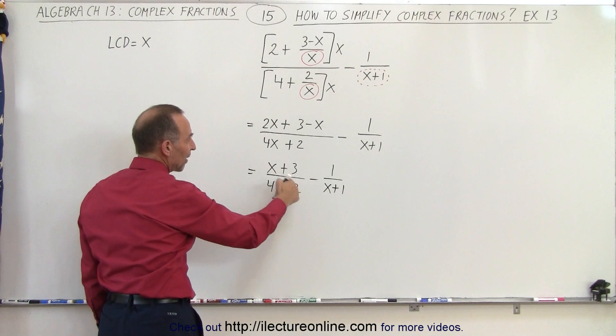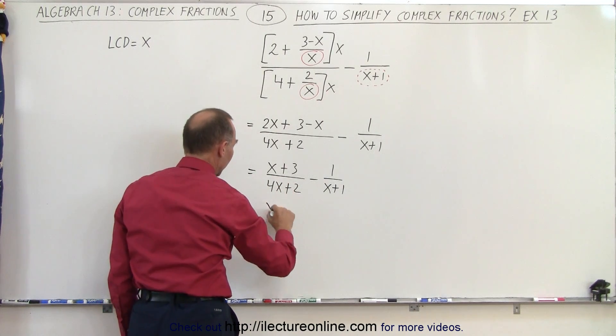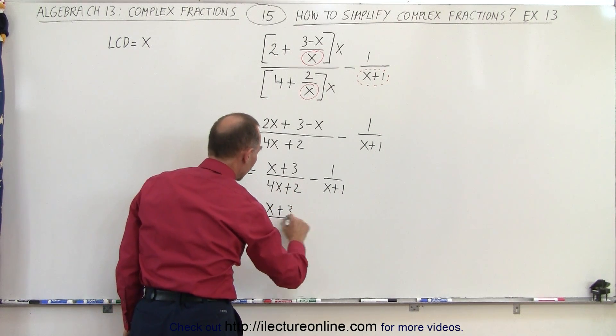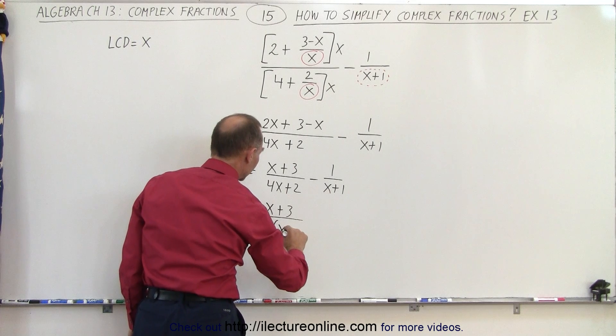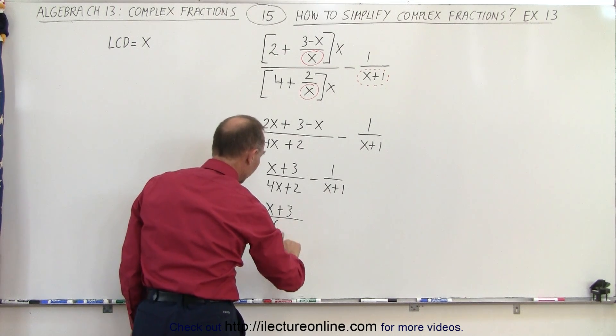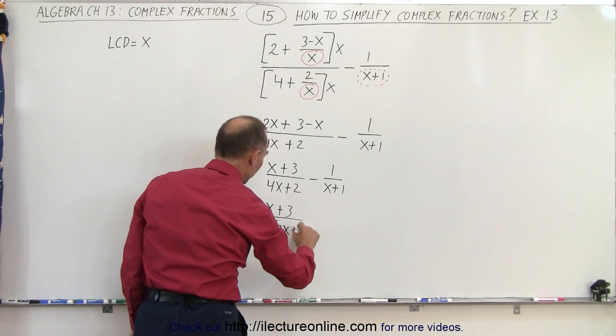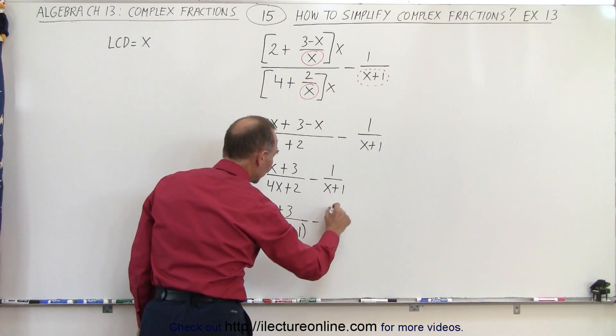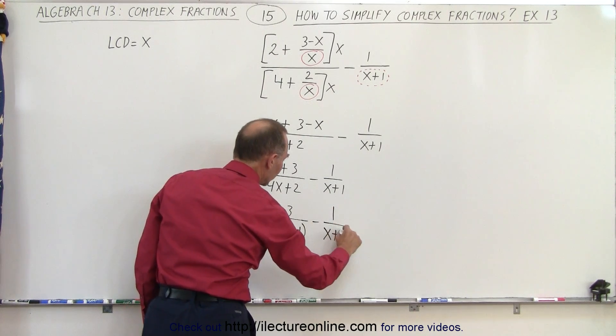Now here I can factor out a 2 so this is equal to x plus 3 times 2 times x, or not x but 2x plus 1. So let's write this as 2x plus 1 and here we have a minus 1 over x plus 1.